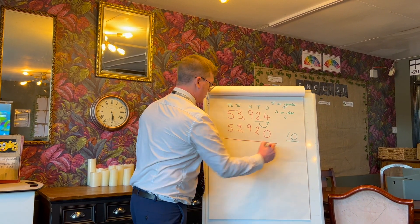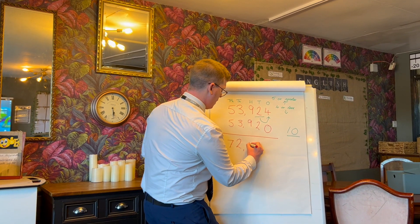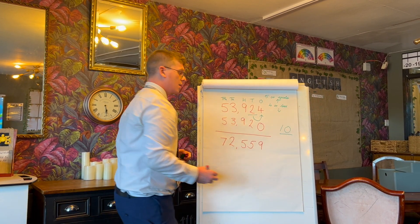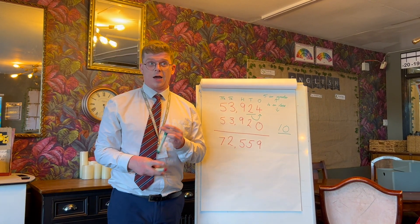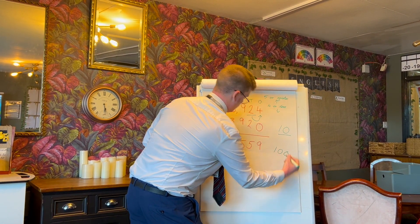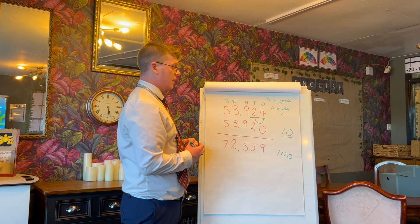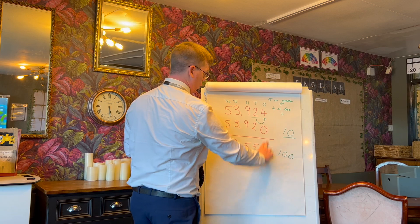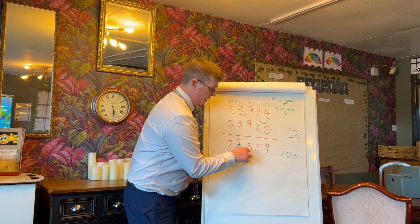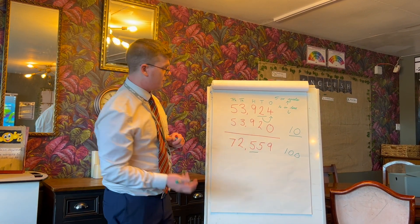That is because 24 is closer to 20 than it is to 30. Now to give another example, let's say I had the number 72,559. This time I'm going to round to the nearest one hundred. So in order to do this I need to find which digit is in the hundreds column.